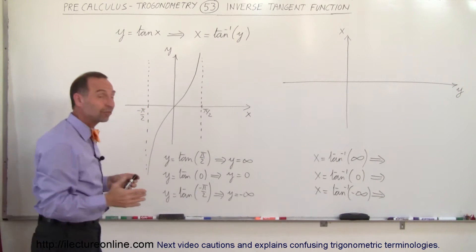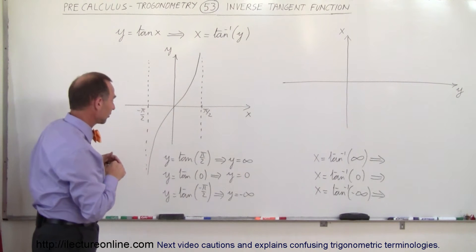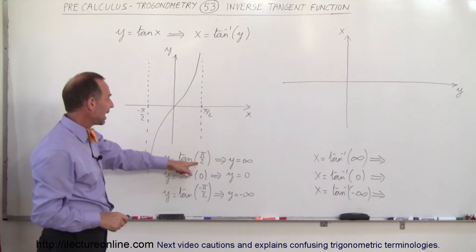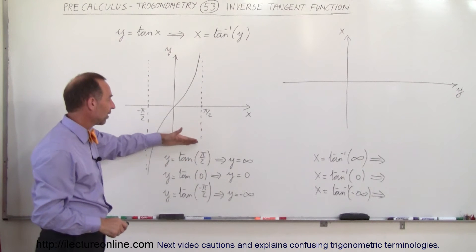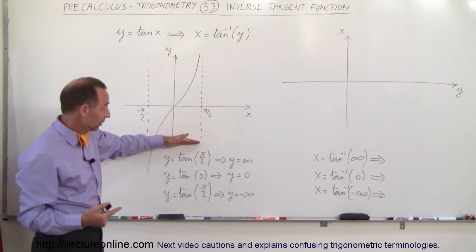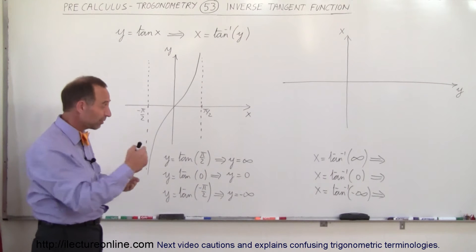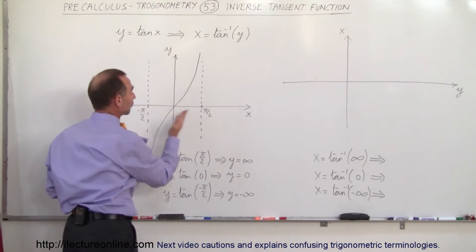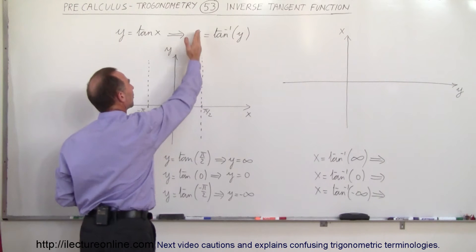Let's graph. Here we have the graph of the tangent of x. When the angle is π over 2, since it's the sine over the cosine, the sine of π over 2 is 1, but the cosine of π over 2 is 0. 1 divided by 0 gives you infinity, so as you approach π over 2, the tangent of that angle goes to infinity.